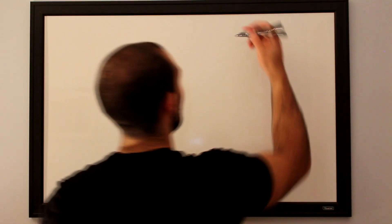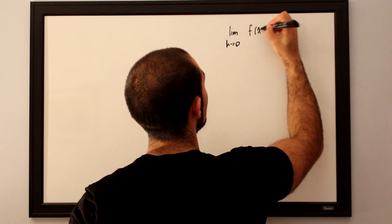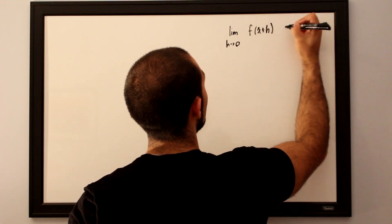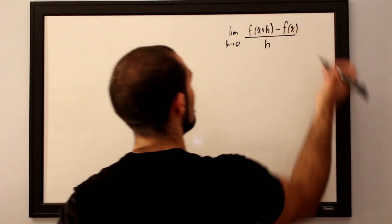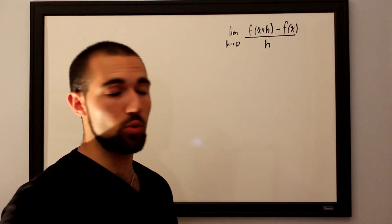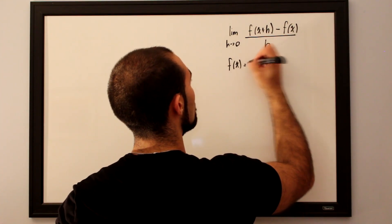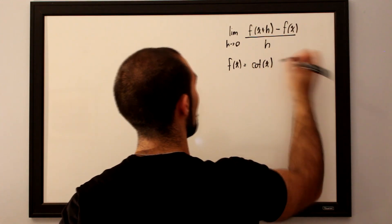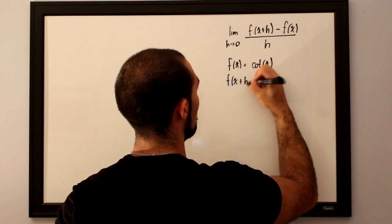We'll be taking our final example: the derivative of cotangent of x using the limit definition of the derivative. We know that a derivative can be taken using the limit as h approaches 0 for f of x plus an infinitely small increase in x denoted by h, subtracting off your initial function and dividing the entire thing by h. In this case our f of x is equal to cotangent of x, and this is probably one of the toughest ones out there, requiring the most algebraic manipulation.